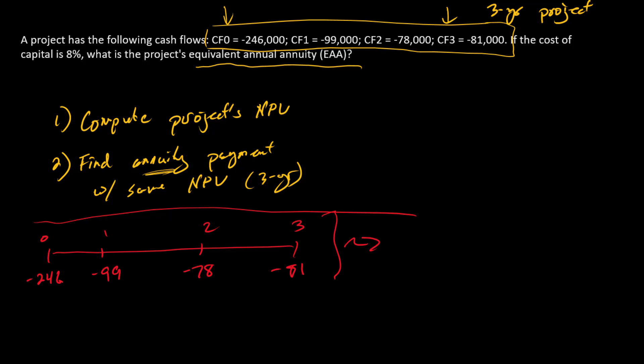So I'll let you do that on your own, but you'll get this number, negative 468.84. And so that's step one. Step one is done.